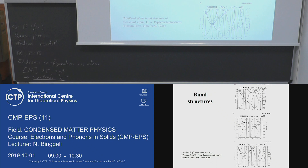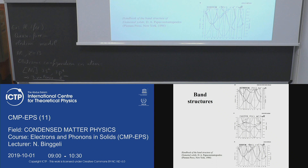If you want to define the energy needed to extract an electron, you need a surface and vacuum. That energy will depend on which surface of the crystal you are considering. So the zero of energy is not well defined in a crystal — it's arbitrary. Usually what one does is set the zero of energy at the Fermi energy. That is an arbitrary choice, but it is not the case in this figure.